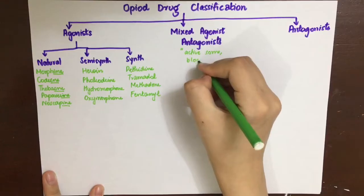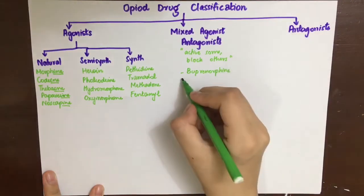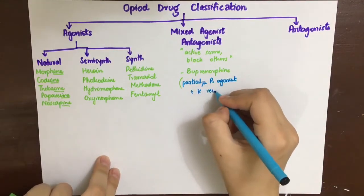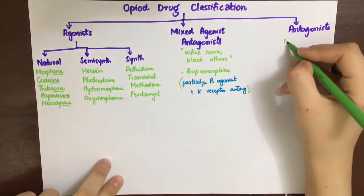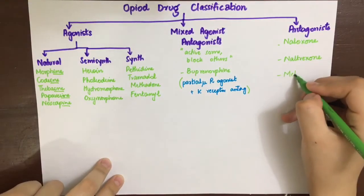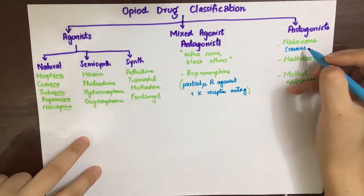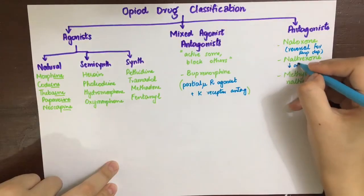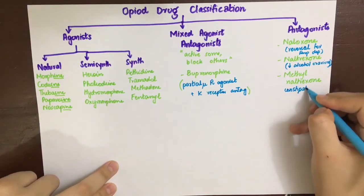Mixed agonist-antagonists are drugs that activate some opioid receptor subtypes and block others. For example, buprenorphine is a partial mu receptor agonist and kappa receptor antagonist. The pure antagonists include naloxone and naltrexone, which reverse opioid toxicity. Naloxone reverses respiratory depression from opioid overdose, naltrexone decreases alcohol craving, and methyl naltrexone is used for opioid-induced constipation.